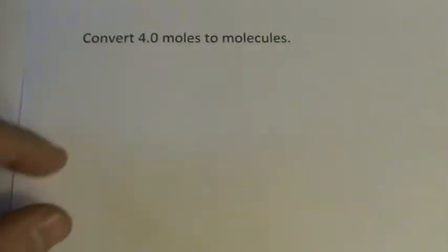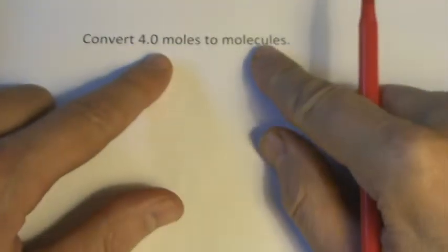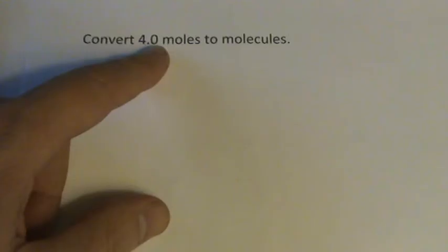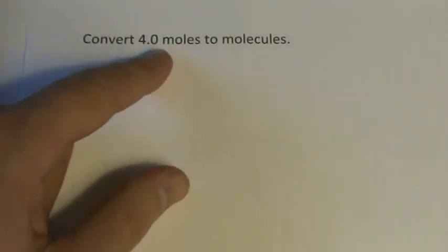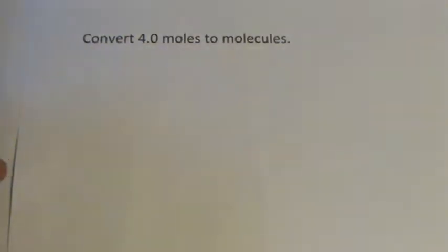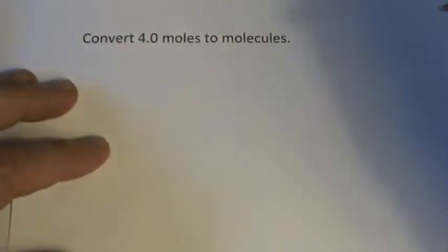In this problem we're going from moles to molecules. There's no mention of grams, so we don't need to worry about the GFM, and it really doesn't matter what substance we're dealing with because it's just moles. One mole is always 6.02 times 10 to the 23rd particles, molecules or atoms or ions, but it's always 6.02 times 10 to the 23rd. Let's follow our procedure here.